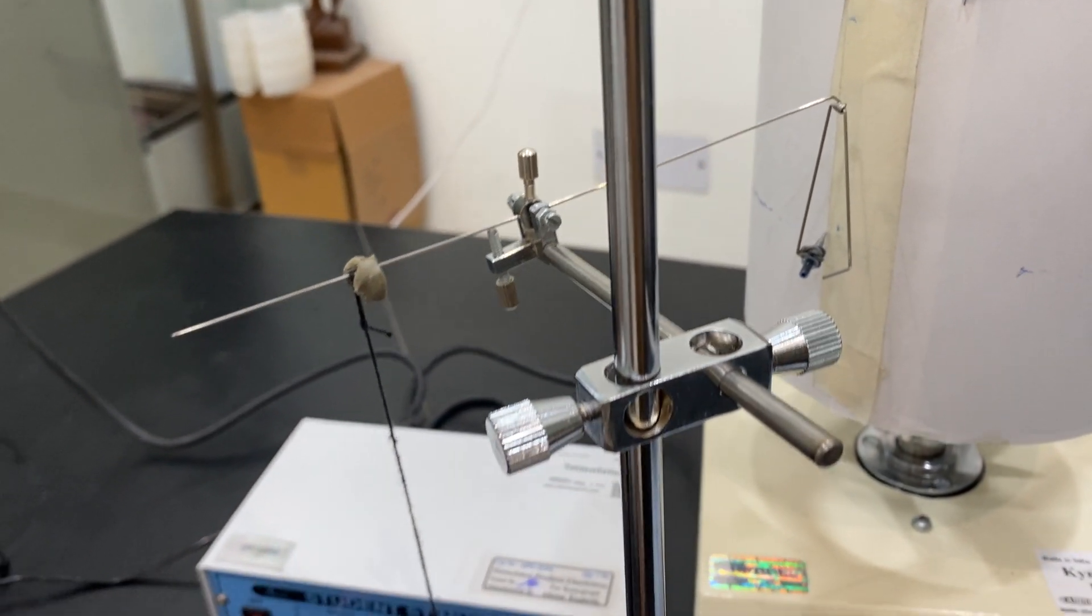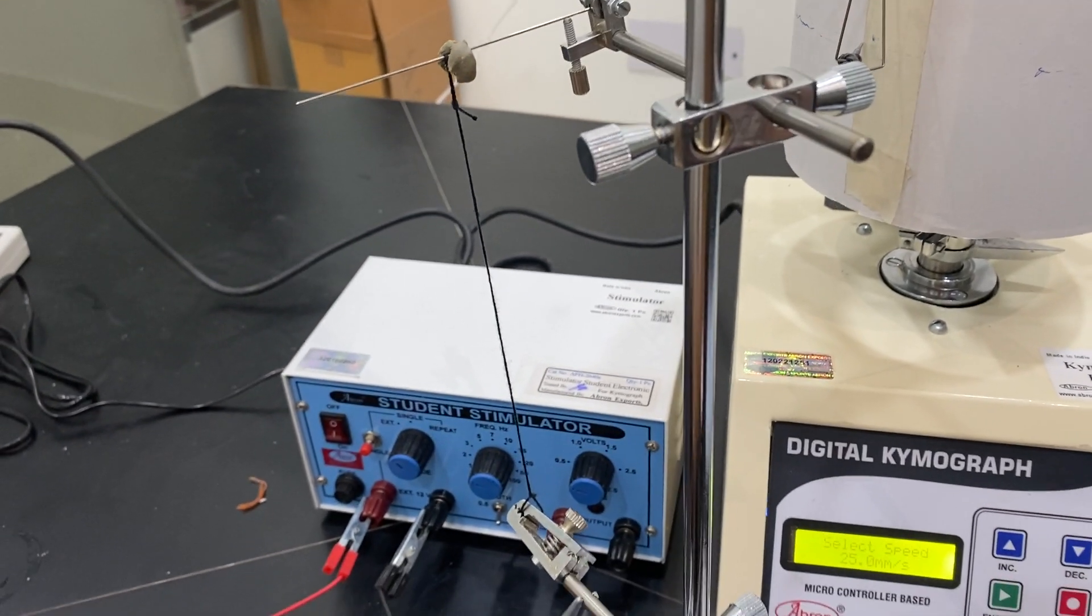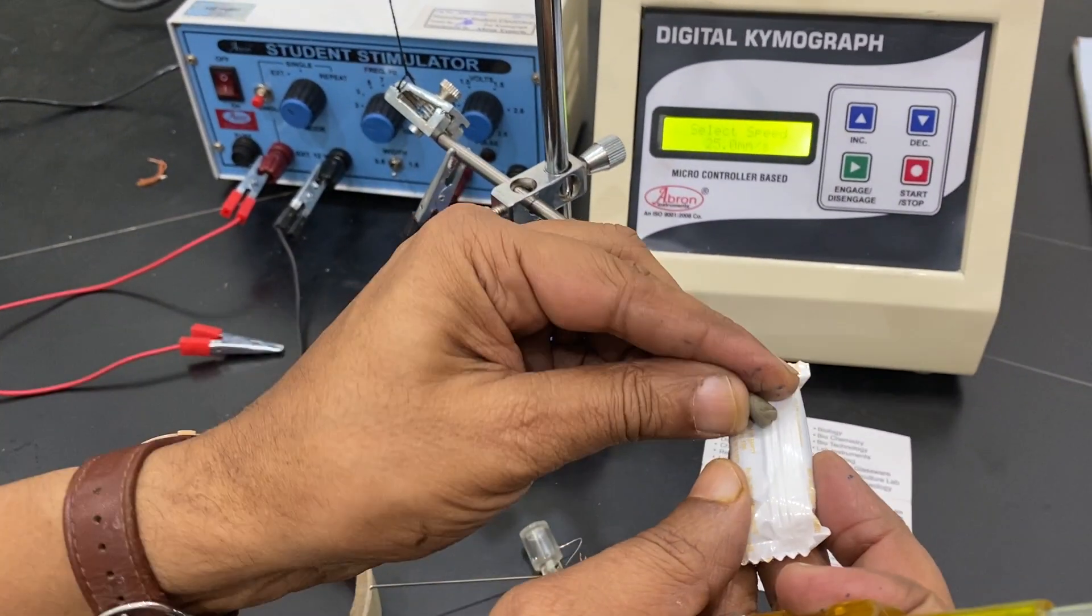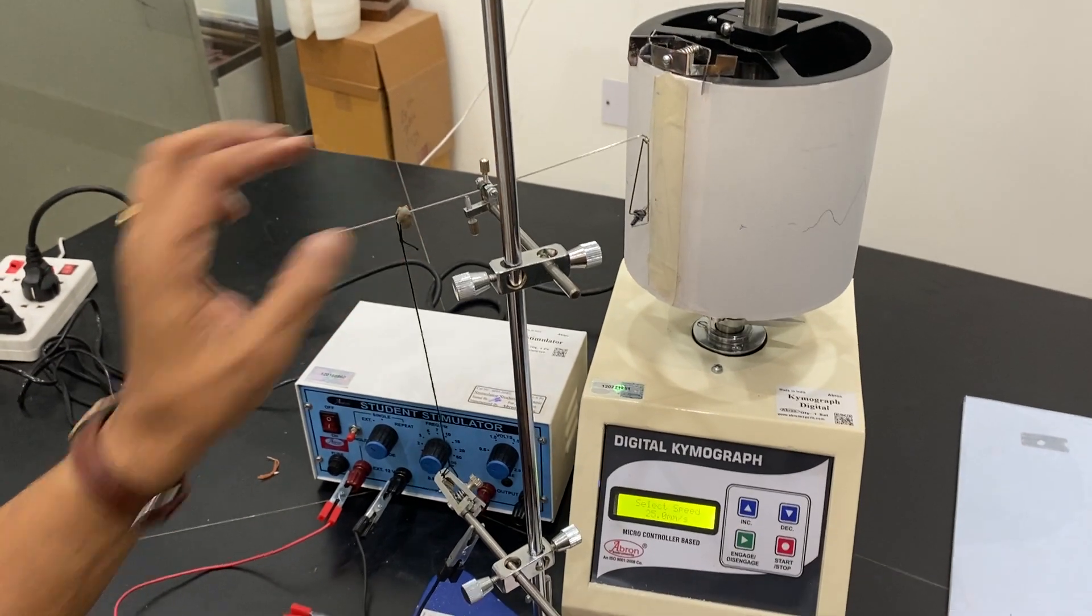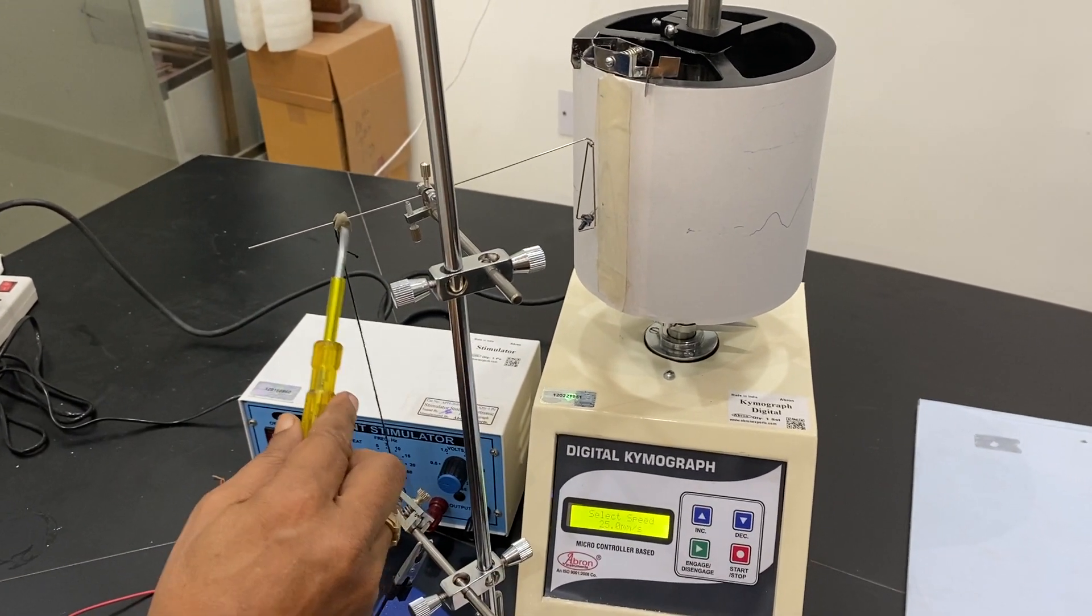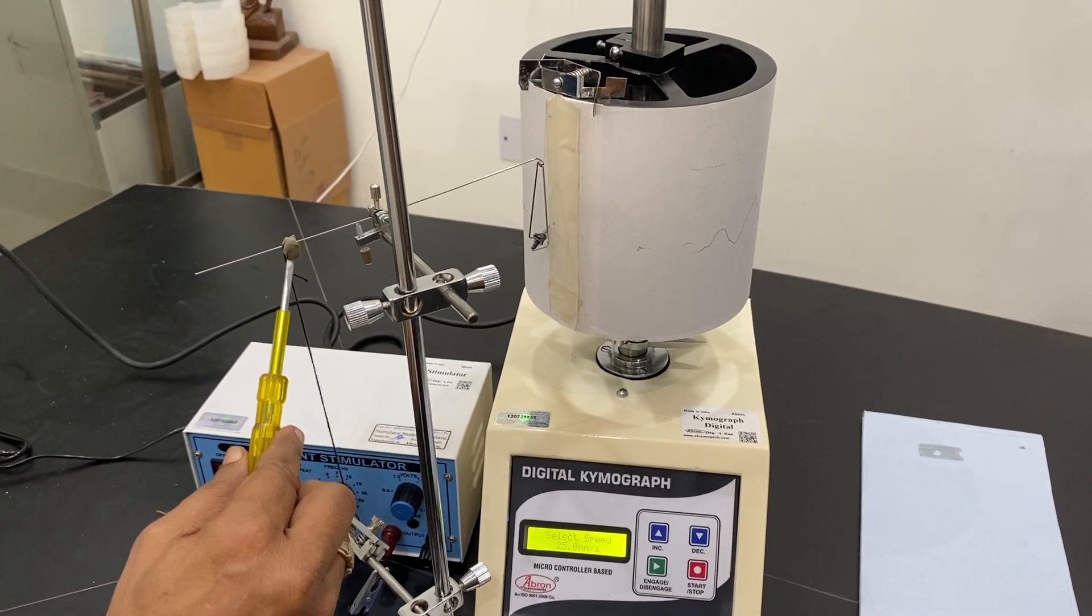Now I have used this M seal kind of material. I have made a ball and kept it here as a counter balance. It works for two uses, one for counter balance, another for holding the muscle.